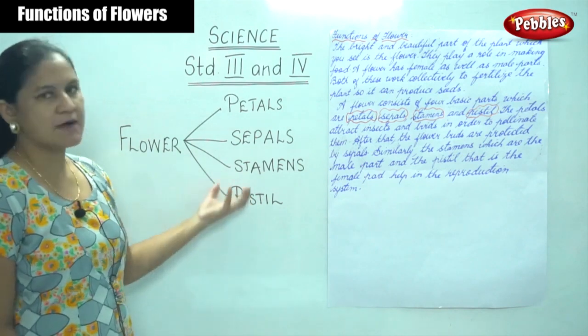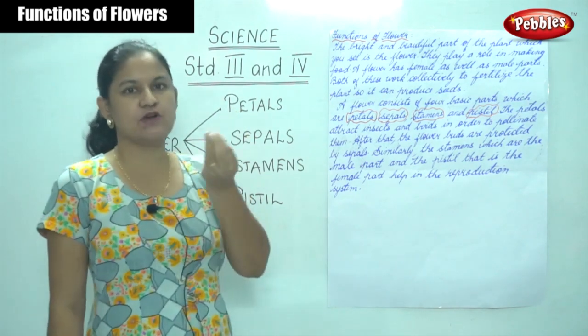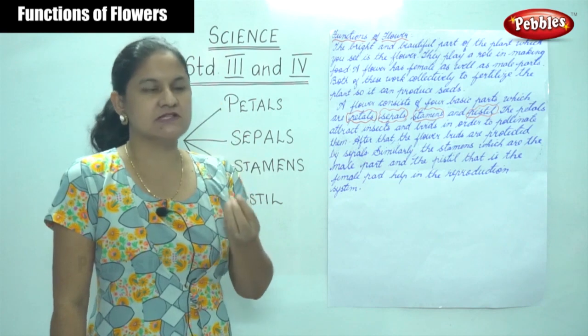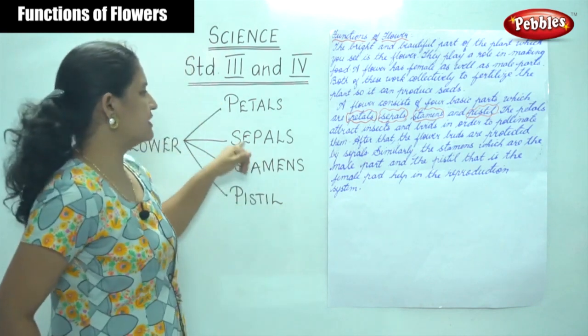The second part is the flower buds that appear on a plant. The flower buds are protected by the sepals.